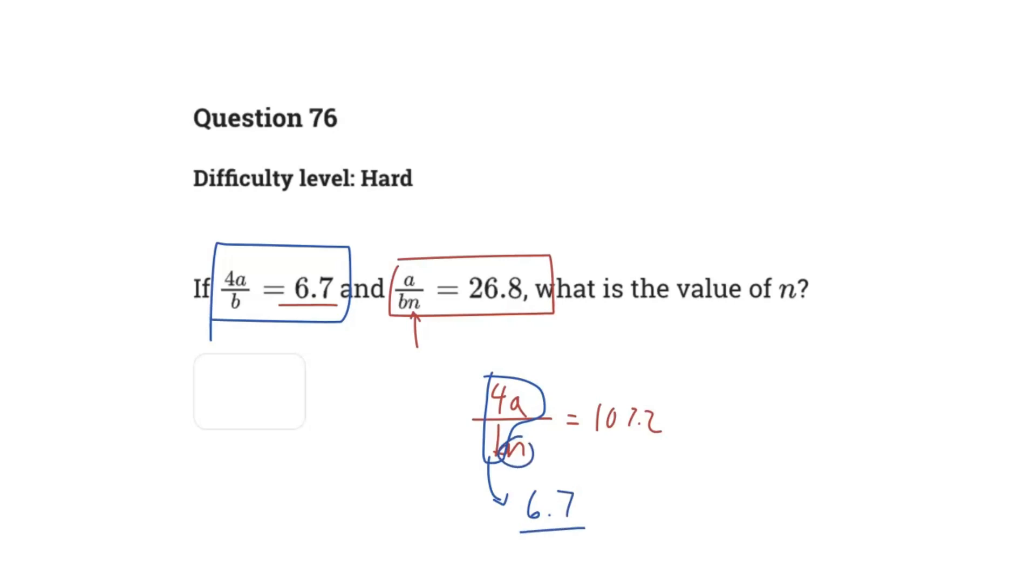So 6.7 over n is equivalent to 107.2. You can rearrange this to solve for n, and we would get a value of 6.7 over 107.2 equals n.